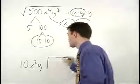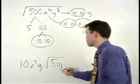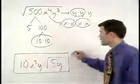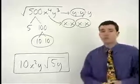So we have square root of 5y. And the answer is 10x squared y times the square root of 5y.